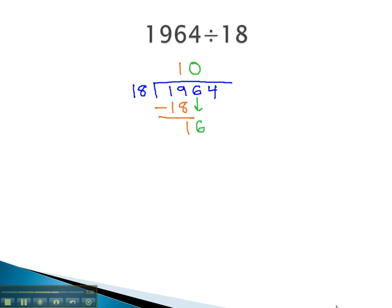Stick a 0 up there. 0 times 18 is 0, and we subtract and get 16. And now, we can bring down that extra digit of 4.